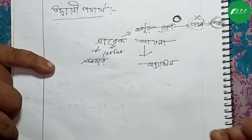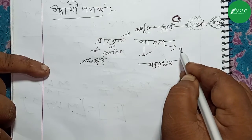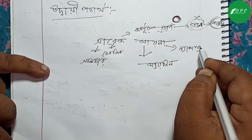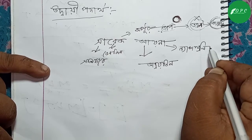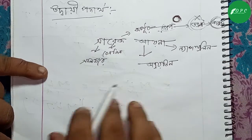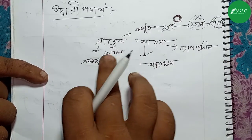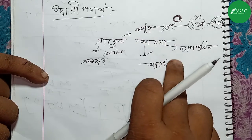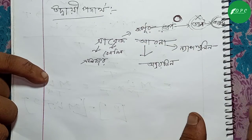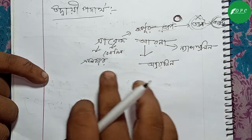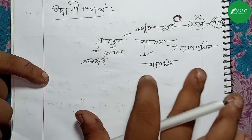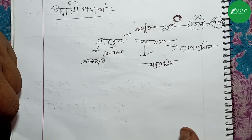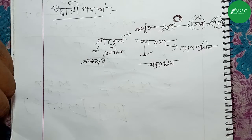আয়োডিন, নেপথোলেন, কীভাবে তো শাবধানে সালফার, বেনজিন, কর্পূর — এগুলোই হলো উদায়ী পদার্থ। আয়োডিন, নেপথোলেন, বেনজিন, সালফার — এগুলো সহজে মনে রাখো।